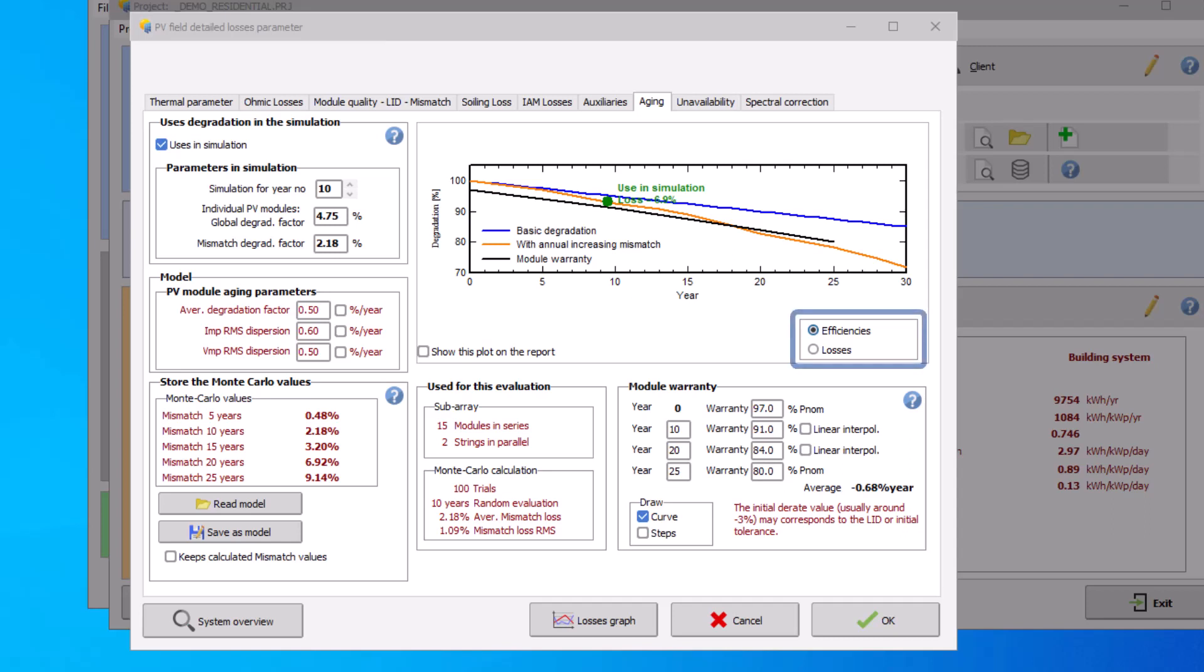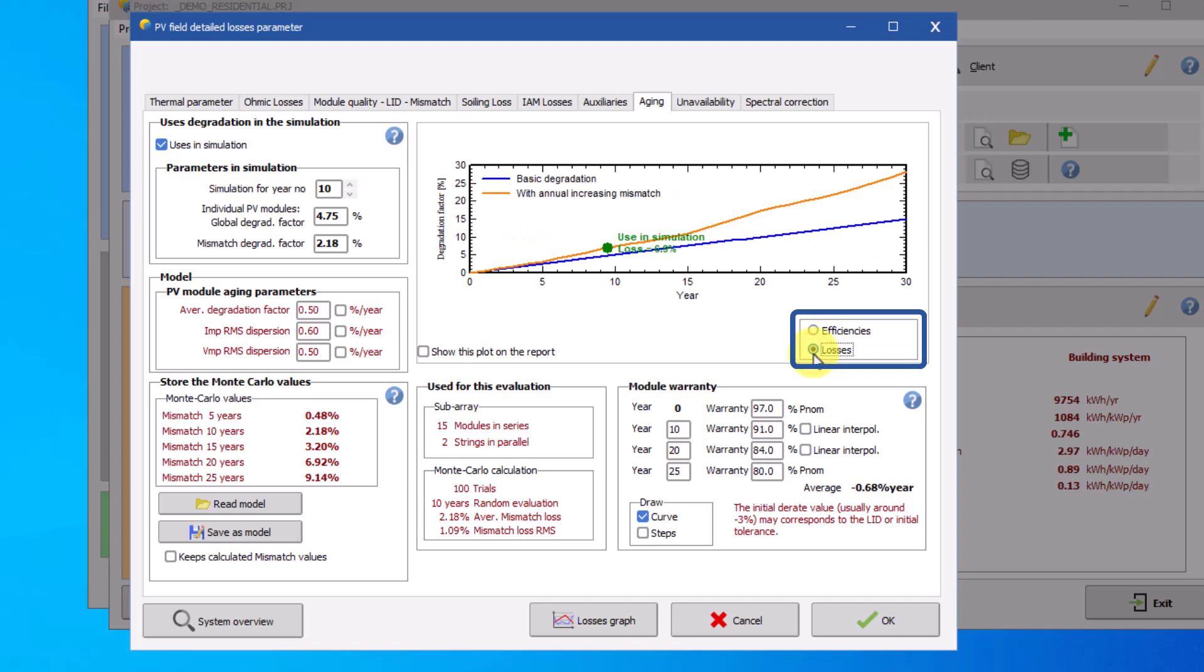You can also display the degradation losses over a number of years. This time you will see an increasing curve due to the escalation of losses as the year advances. Once the aging losses parameters are defined, click on the OK button.